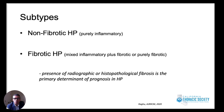That classification did not have any prognostic or important information regarding patient care, and there was confusion about the subacute category — when did acute start, when did it become subacute, and when did it become chronic? In recent years, studies show that the presence of fibrosis is a significant determinant of prognosis. Based on that, the current guidelines have adopted a new nomenclature: fibrotic hypersensitivity pneumonitis and non-fibrotic hypersensitivity pneumonitis.